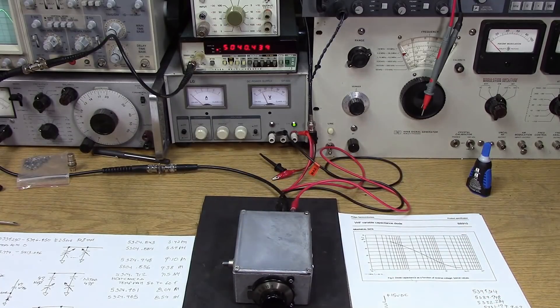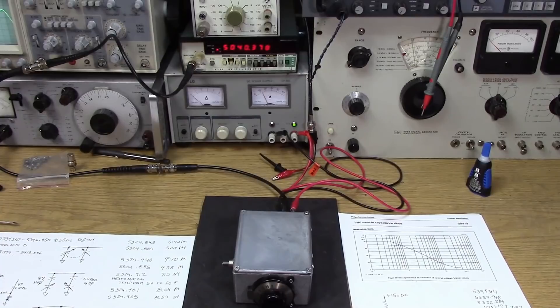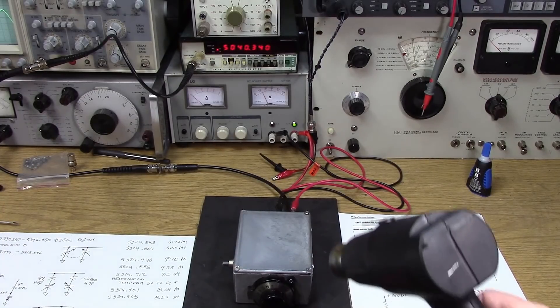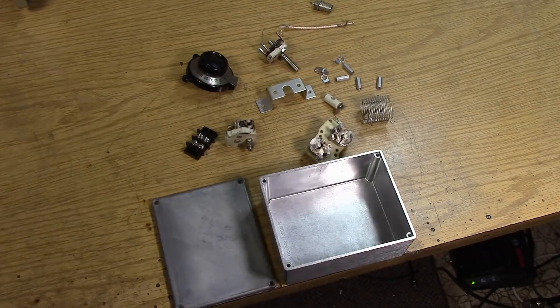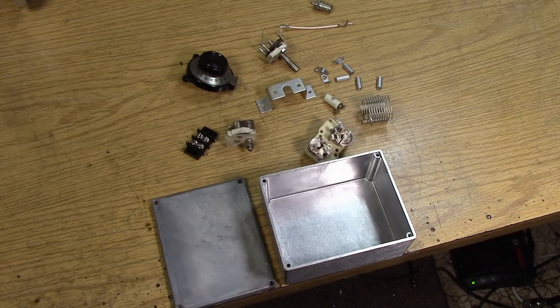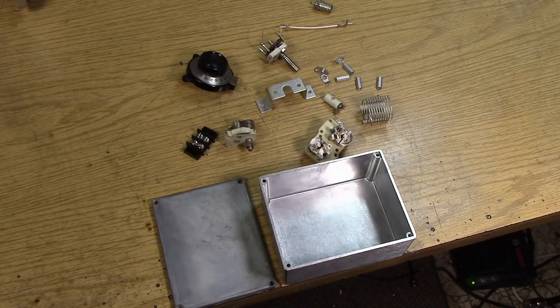I know that's very crude using a heat gun—we should be doing this in a controlled oven. But what is this telling you about this VFO? The frequency is going down. It tells you it needs to be corrected with a negative temperature coefficient capacitor.